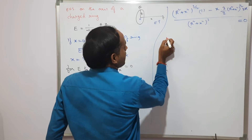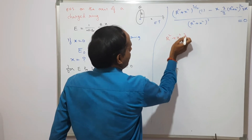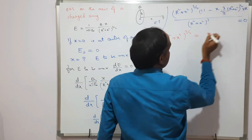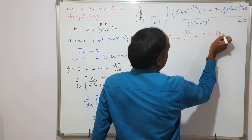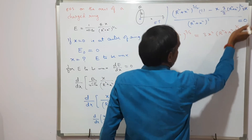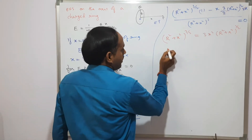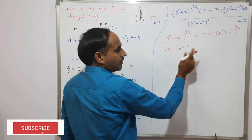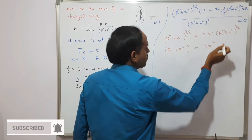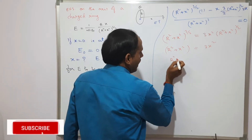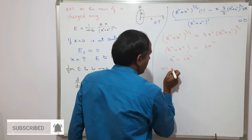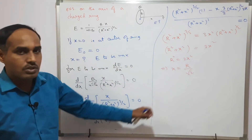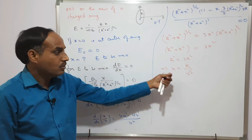Since the denominator is nonzero, the numerator equals zero: (r² + x²)^(3/2) = 3x²·(r² + x²)^(1/2). Dividing both sides by (r² + x²)^(1/2) gives r² + x² = 3x², so r² = 2x², which gives x = r/√2. At the distance x = r/√2, the electric field E is maximum.